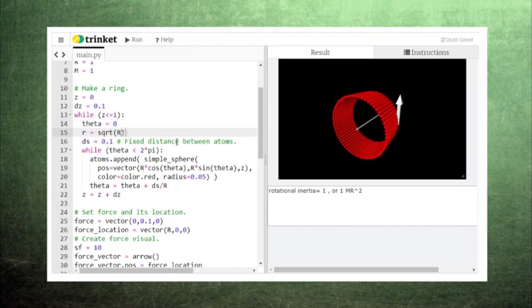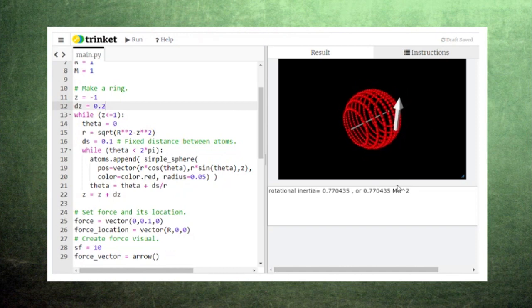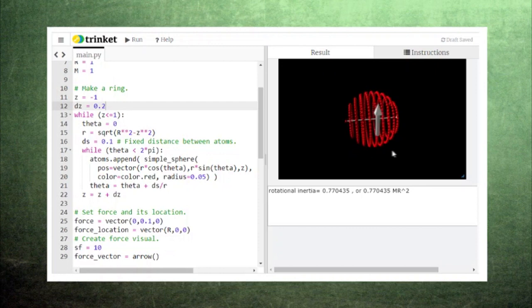We can change our cylinder into a spherical shell by adjusting how the position of each atom is determined. Then, we get a different value for the rotational inertia, and we can see that the rotational acceleration is different, even though we're exerting the same force since the shape has changed.